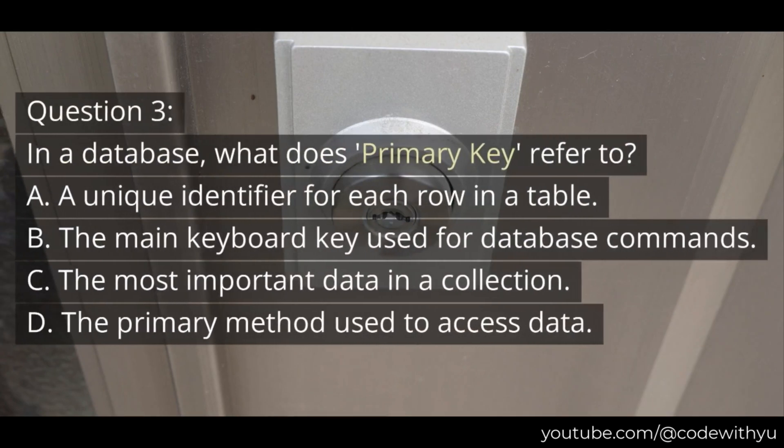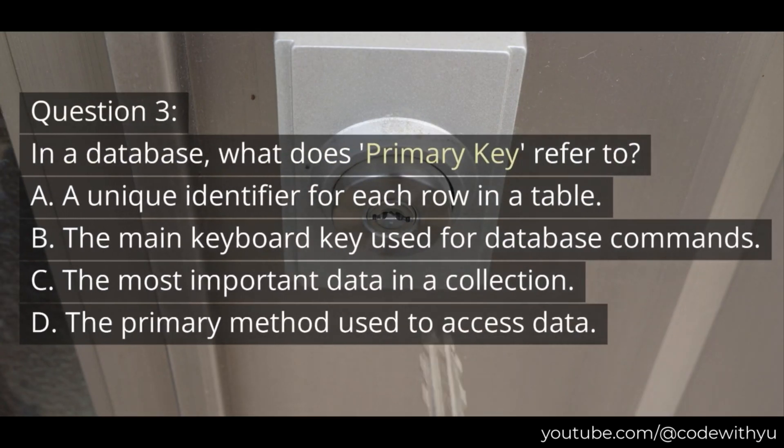Question 3. In a database, what does primary key refer to? A. A unique identifier for each row in a table. B. The main keyboard key used for database commands. C. The most important data in a collection. D. The primary method used to access data.